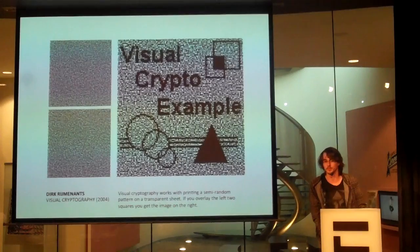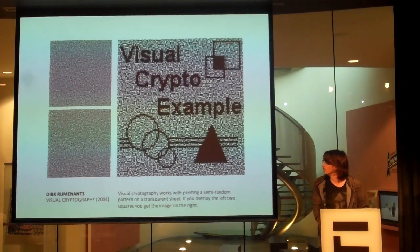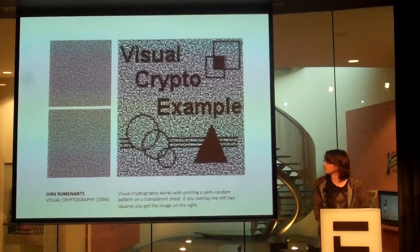You also have visual cryptography. In this case, if you overlay just two squares on the left, you get the image on the right.